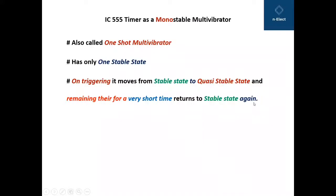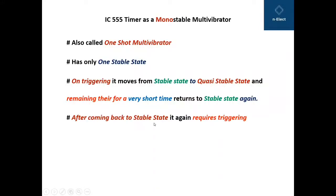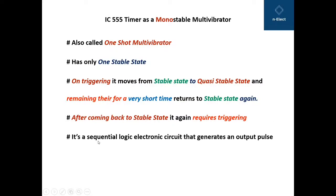When it is triggered, it moves from stable state to quasi-stable state. In quasi-stable state, it remains for a very short time and returns back to stable state. After coming back to stable state, it again requires triggering. It is a sequential logic electronic circuit that generates an output pulse.